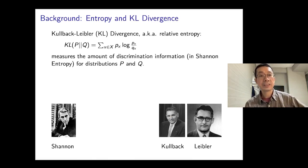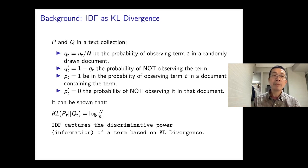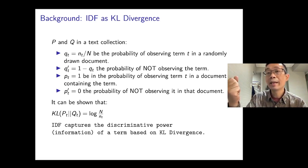In this perspective, the IDF represents the amount of information in a term measured by KL divergence, or conditional entropy. If you look at KL divergence, or Kullback-Leibler divergence, it can be computed by the formula here. What it essentially measures is the amount of discrimination information in Shannon entropy for distributions P and Q. When we apply KL in the context of a text collection, we let QT be the probability of observing a term T in a randomly drawn document. That can be estimated by the number of documents containing the term divided by the total number of documents.